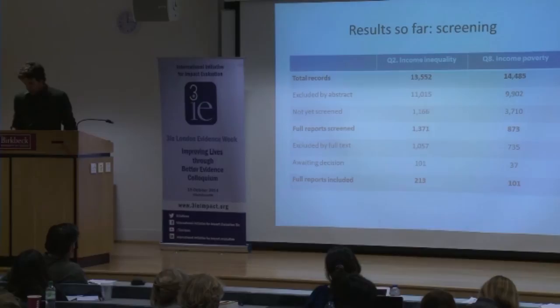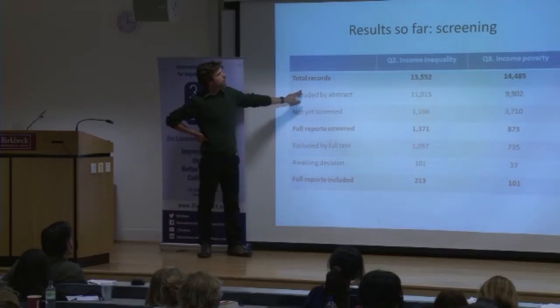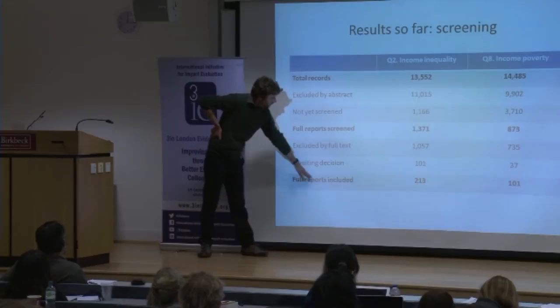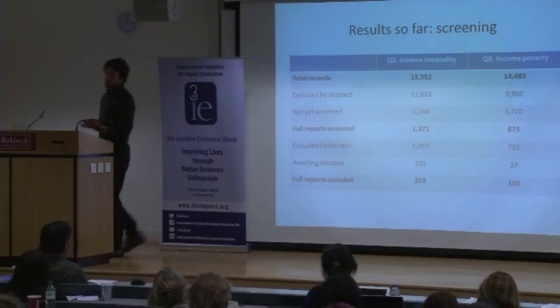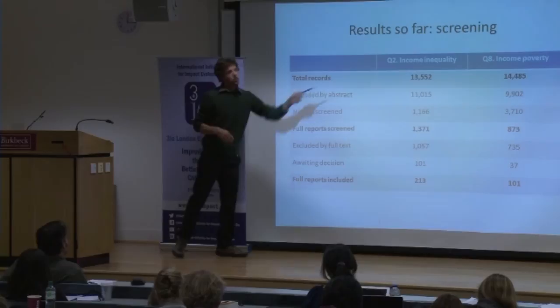To manage the volume of studies, we have set a rather arbitrary cutoff date of 1990, and we are also excluding certain publication types like PhD theses, which were actually incredibly time consuming to go through. We started out with over many thousands of studies and have gradually been whittling them down by excluding ones that don't meet our inclusion criteria, where we're currently left with around 200 studies for the income inequality question and around 100 for the income poverty question, all of which use one of those study designs to look at the effects of government policies and interventions.